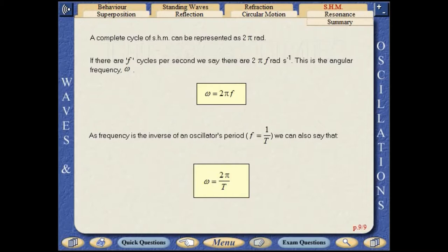This is the angular frequency. As frequency is the inverse of an oscillator's period we can also say that omega equals 2 pi over t.